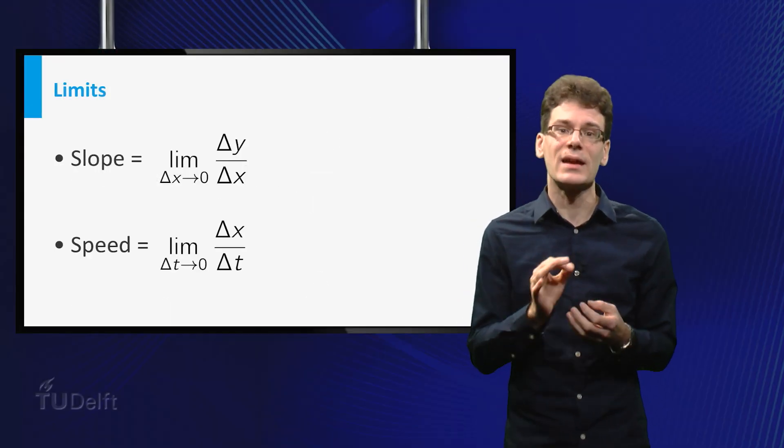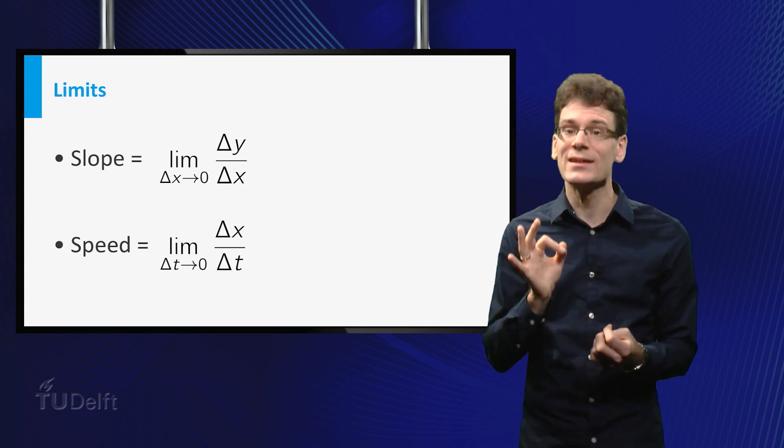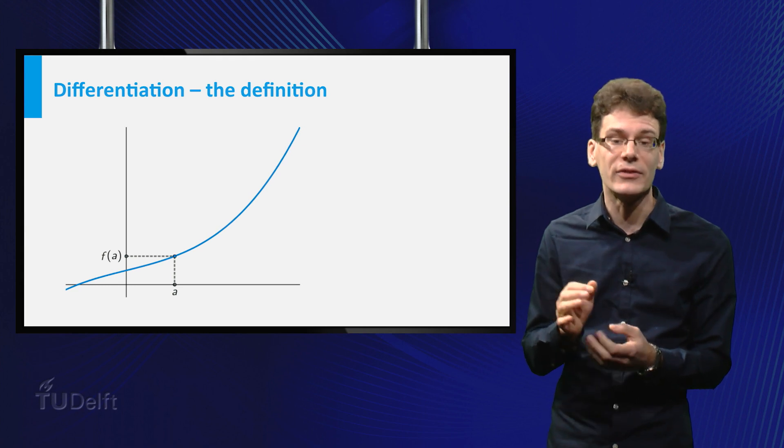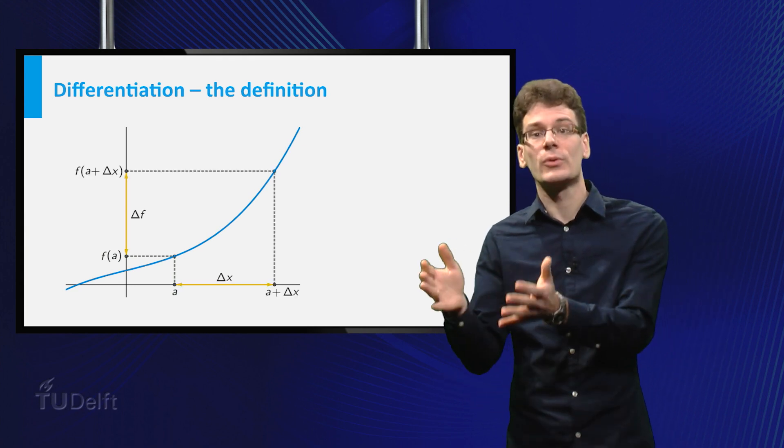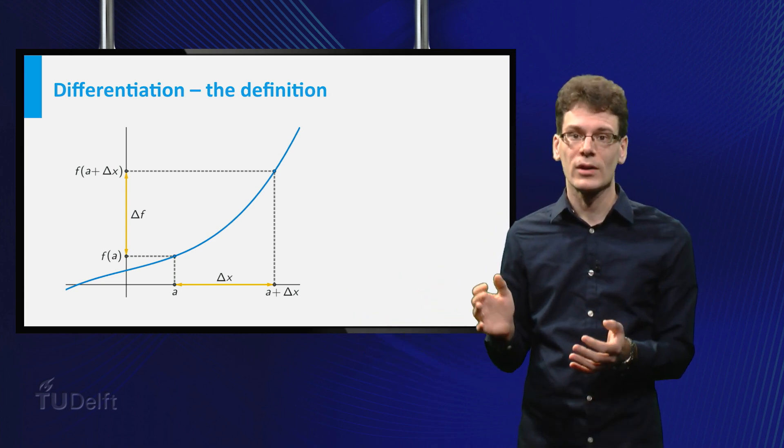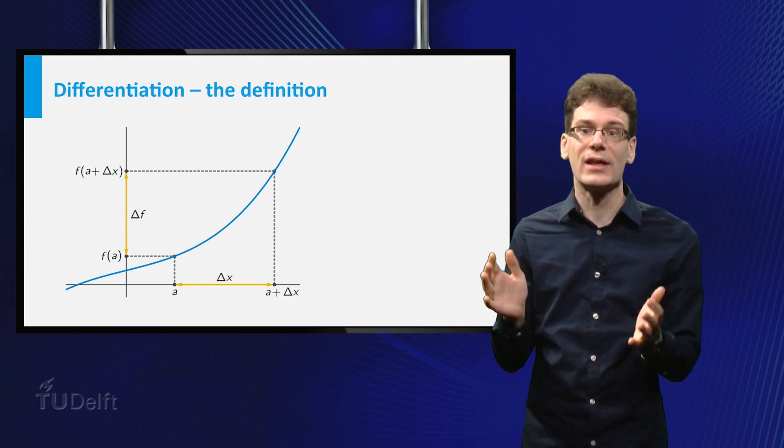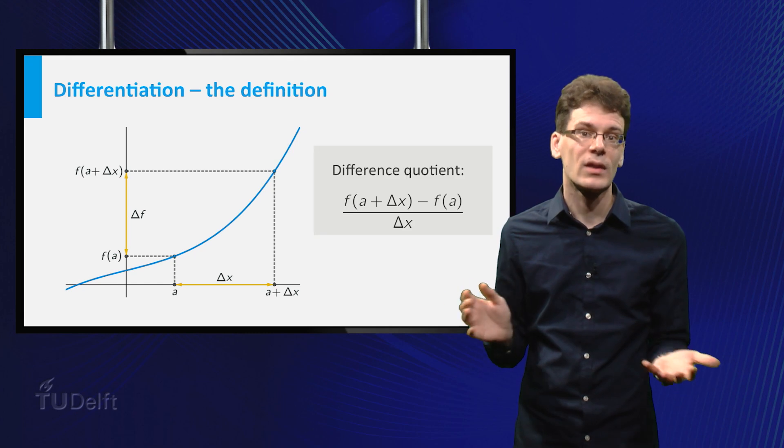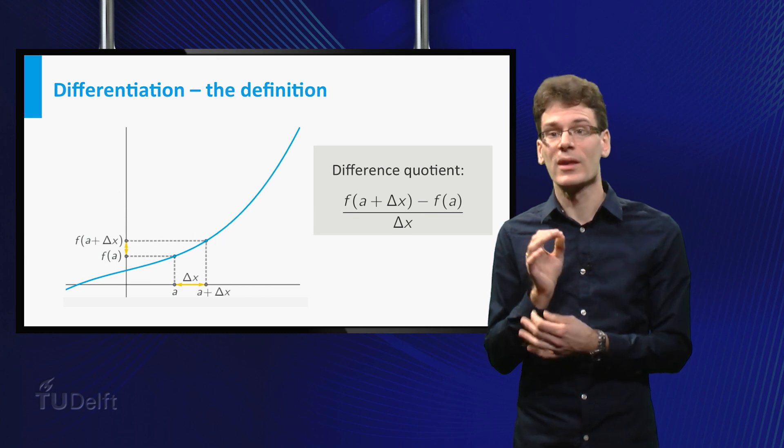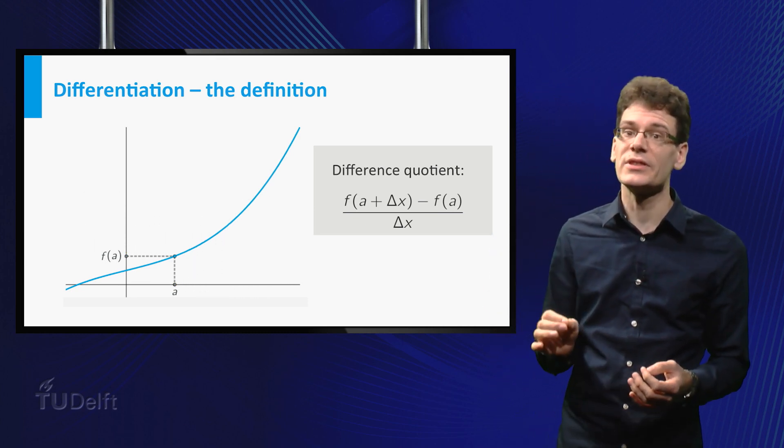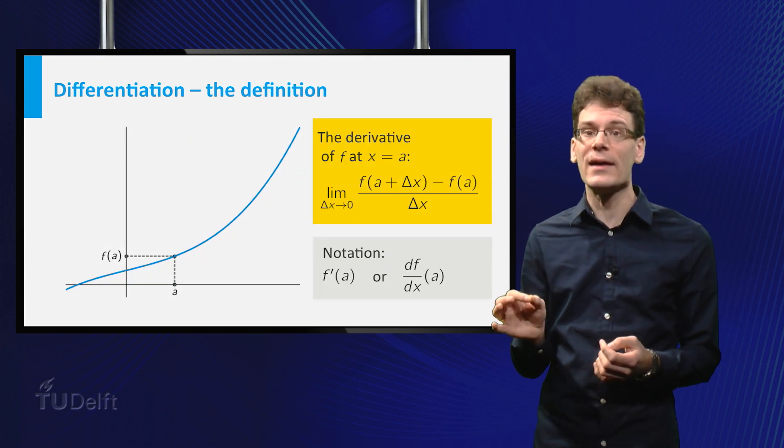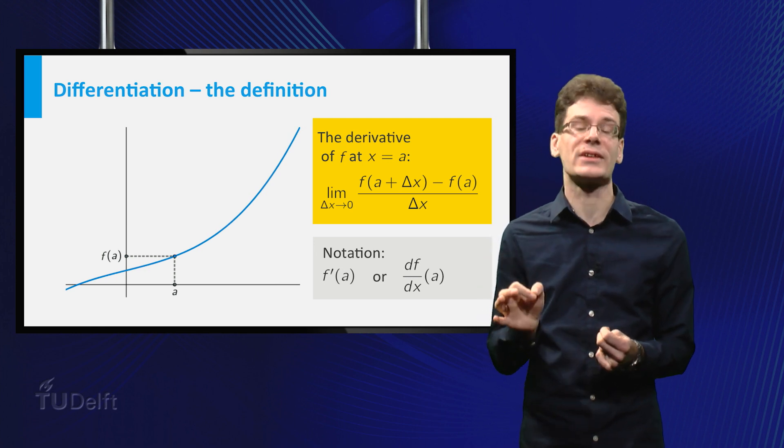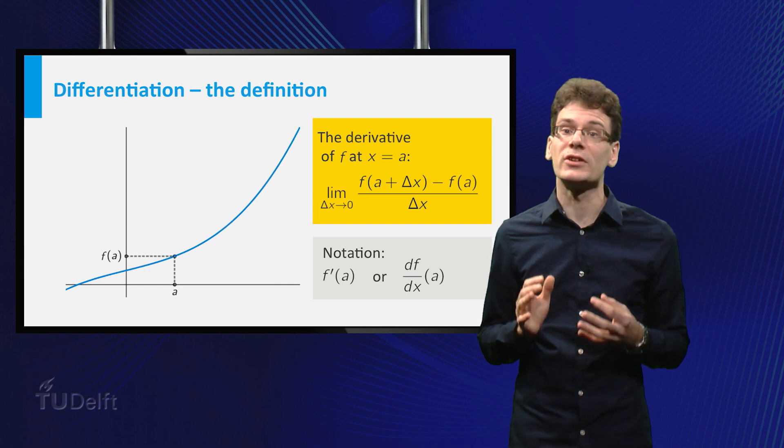We see that both slope and speed can be determined by taking the limit of a quotient. That is exactly what differentiation is. More precisely, suppose a function f and a point with x coordinate equal to a are given. If the x coordinate changes from a to a plus delta x, the function value changes. The vertical increase is equal to f at the point a plus delta x minus f at the point a. The horizontal increase is simply equal to delta x. The quotient of these two is called a difference quotient. Now, we can take the limit of delta x to zero. If this limit exists, the number you obtain is called the derivative of f at x equal to a. It is denoted by f prime of a or df divided by dx in the point a. The whole process of determining the derivative is called differentiation.